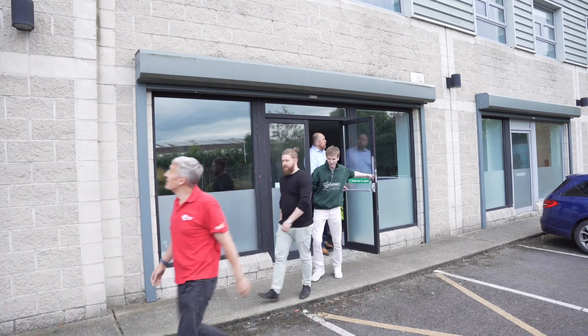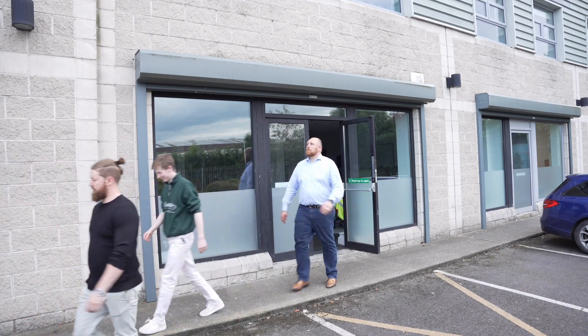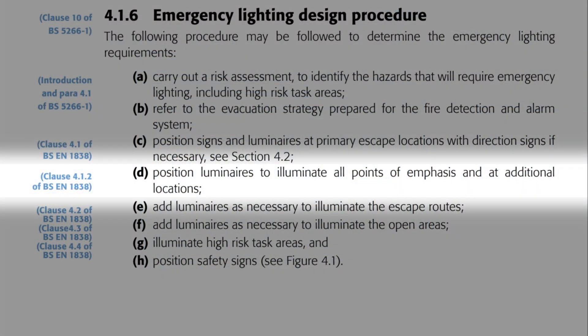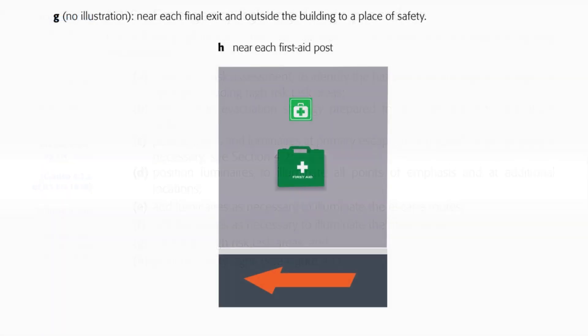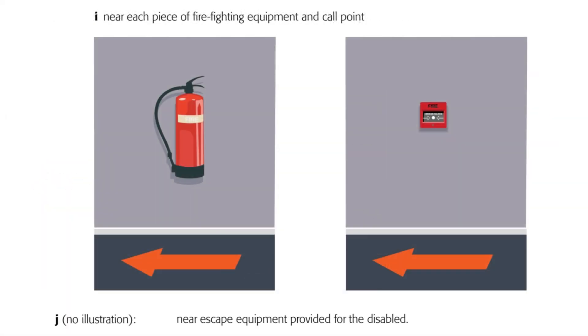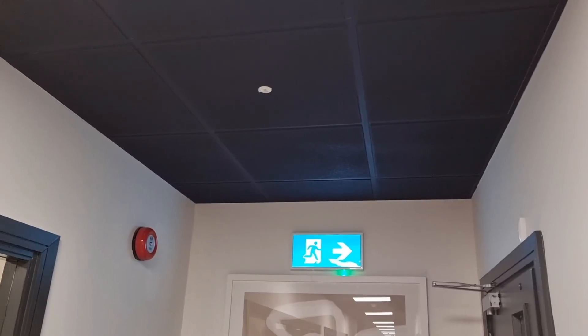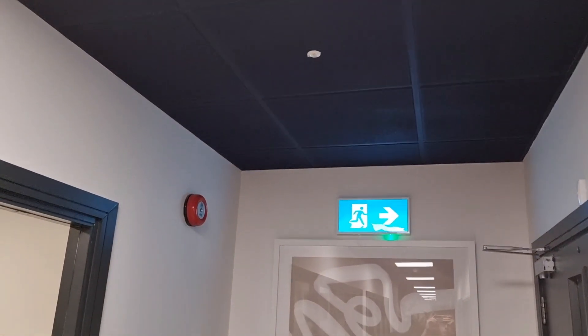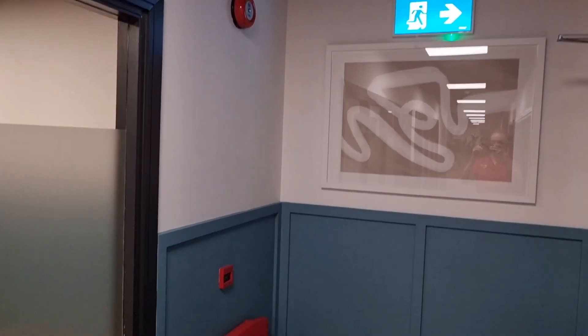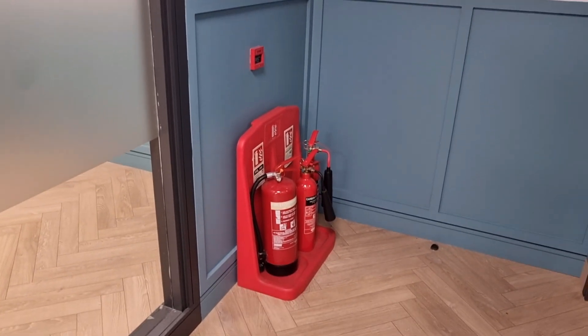Other items that require escape lighting luminaires nearby — which gets us into indent D of the design process — include first aid stations, firefighting equipment such as extinguishers and call points. The guide notes these items should have a vertical illuminance of at least five lux. When carrying out lighting design we often get focused on horizontal illuminance near the floor or work surface, but we must not forget about light levels in the vertical plane on walls, monitors, signs and emergency equipment.